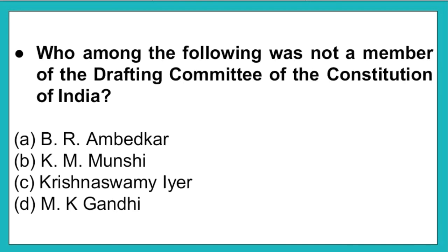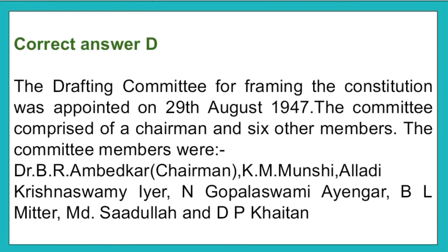The next question: Who among the following was not a member of the drafting committee of the constitution of India? Option A: B.R. Ambedkar. Option B: G. Munshi. Option C: Krishnaswami Iyer. Option D: M.G. Gandhi. The correct answer is option D, M.G. Gandhi. The drafting committee was appointed on 29 August 1947, comprising a chairman and six other members: Dr. B.R. Ambedkar (chairman), G.M. Munshi, Alladi Krishnaswami Iyer, N. Gopalaswami Ayyangar, B.L. Mitter, D.P. Khaitan, and T.T. Krishnamachari.